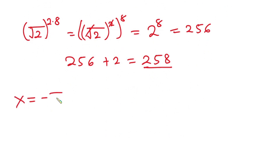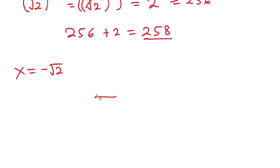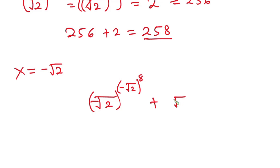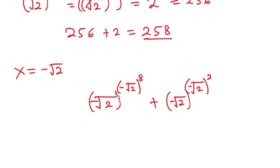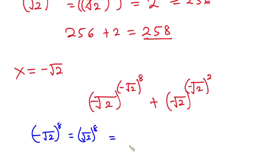Now if x is equal to negative square root of 2, we have negative square root of 2 to the power negative square root of 2 to the power 2. The power here is an even number, so it makes the whole thing positive. Negative square root of 2 to the power 8 is the same as square root of 2 to the power 8, which equals 16.